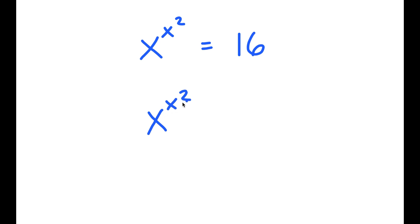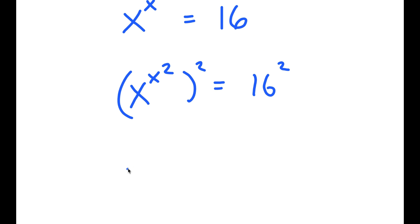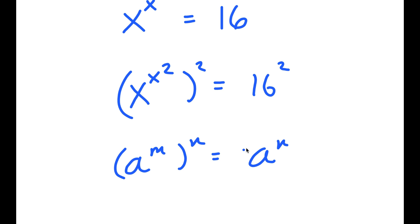I'm going to first start by taking the power of 2 on both sides. Now if I have something in the form a to the power of m to the power of n, this is equal to a to the power of n to the power of m.